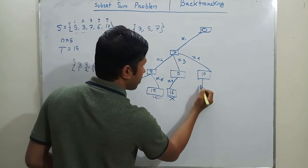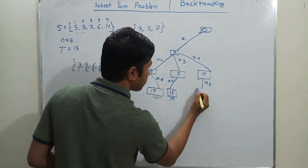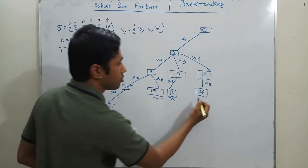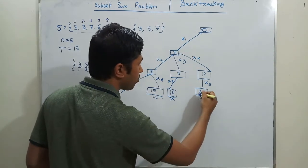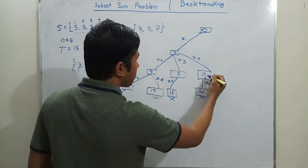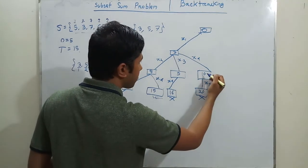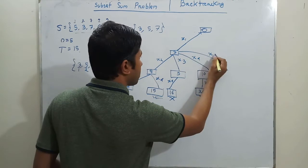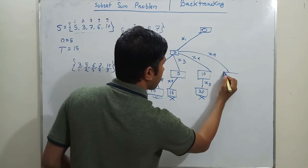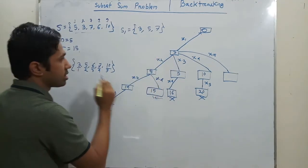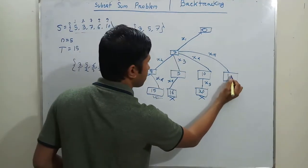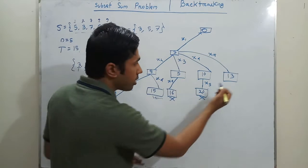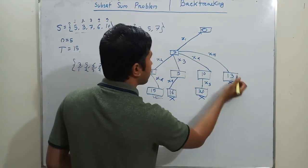We continue to other possibilities. We use x5 with x1: 3 + 10 = 13. Since we have used all available elements and still haven't reached 15, we apply the bounding function and come back. Now we go back to use x2 as the starting element.